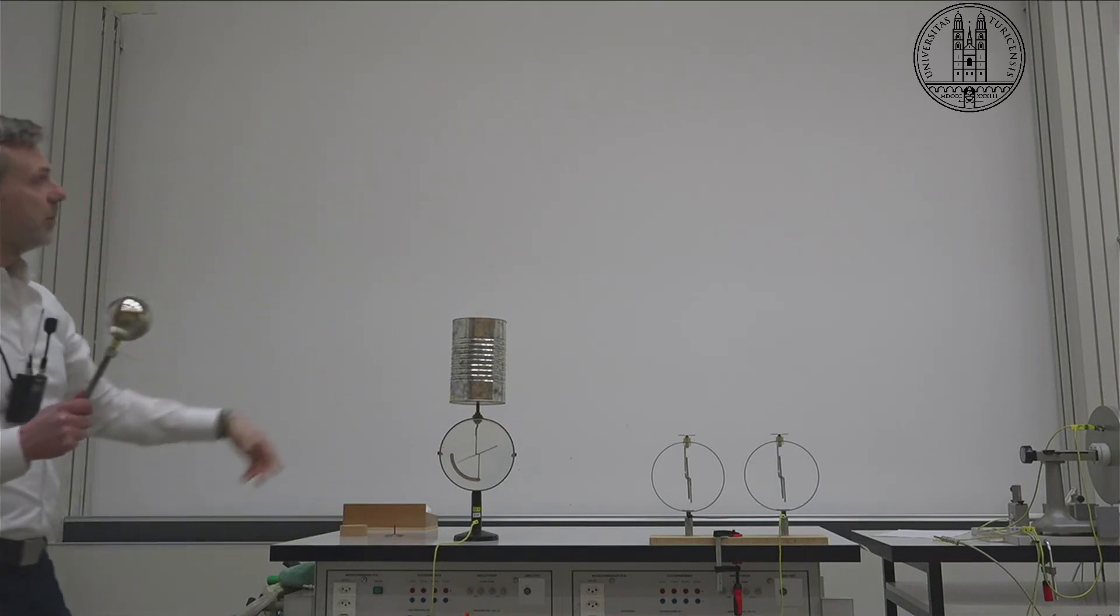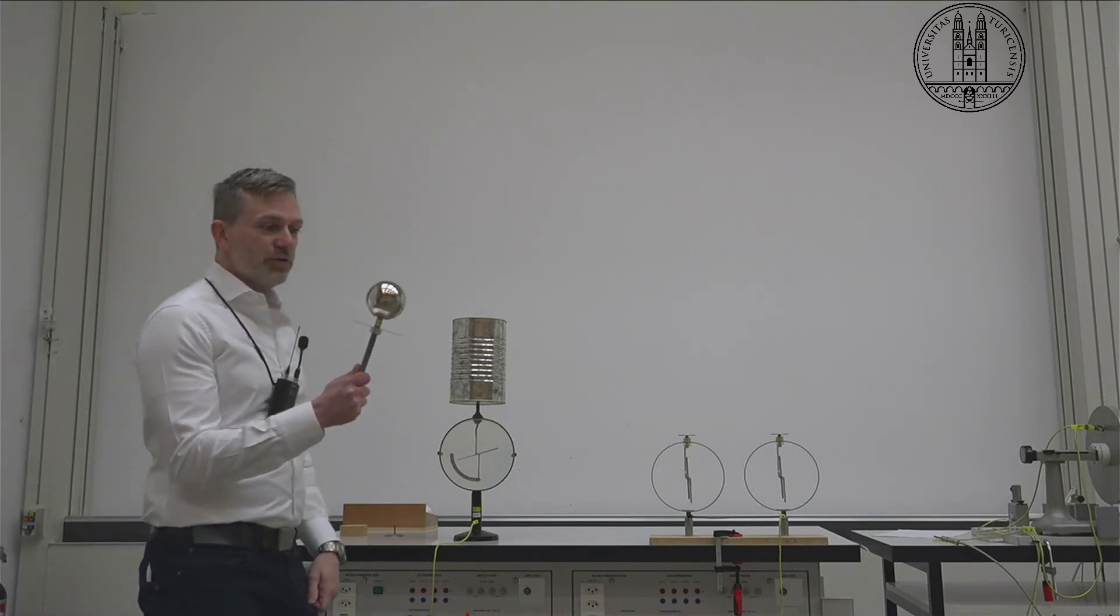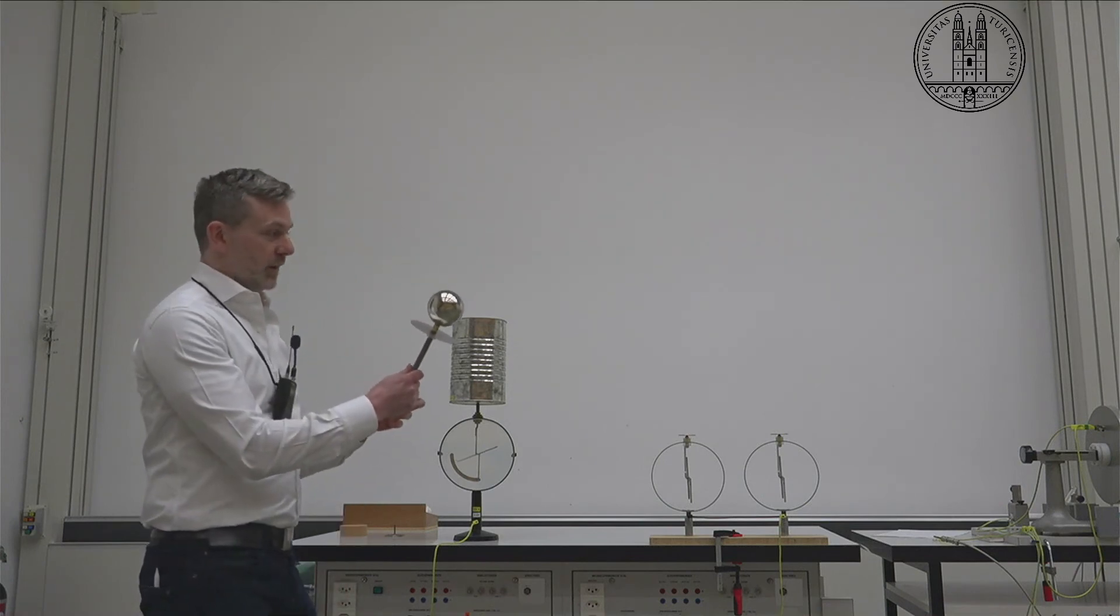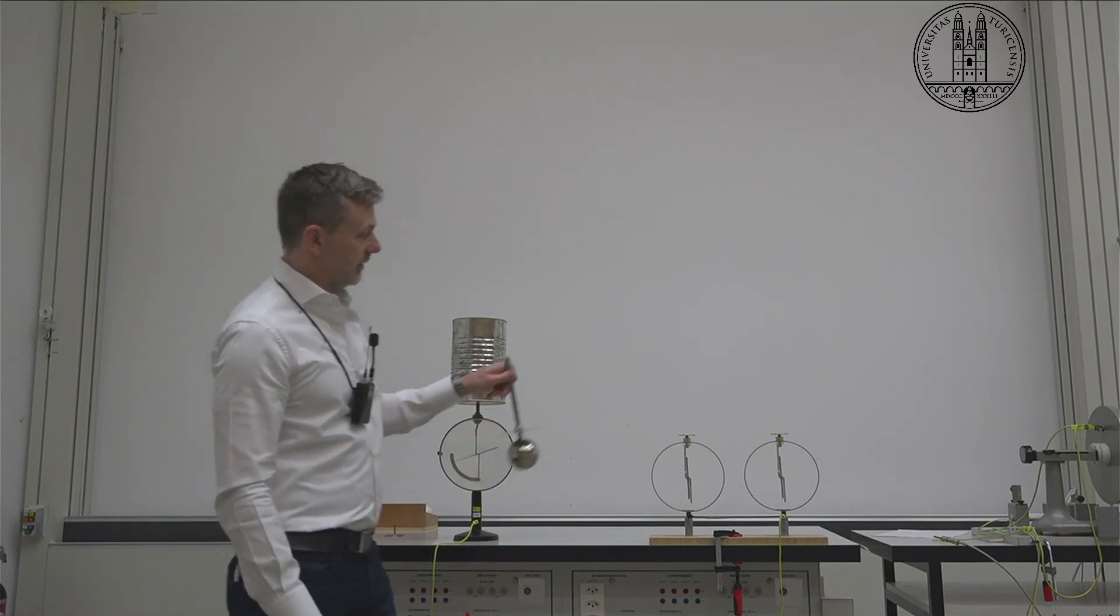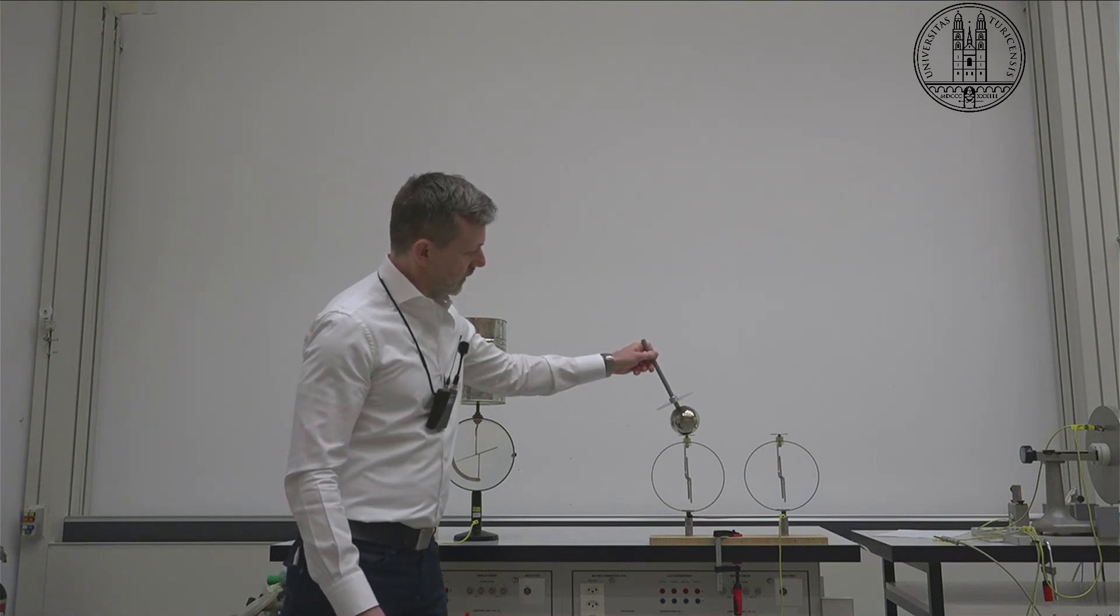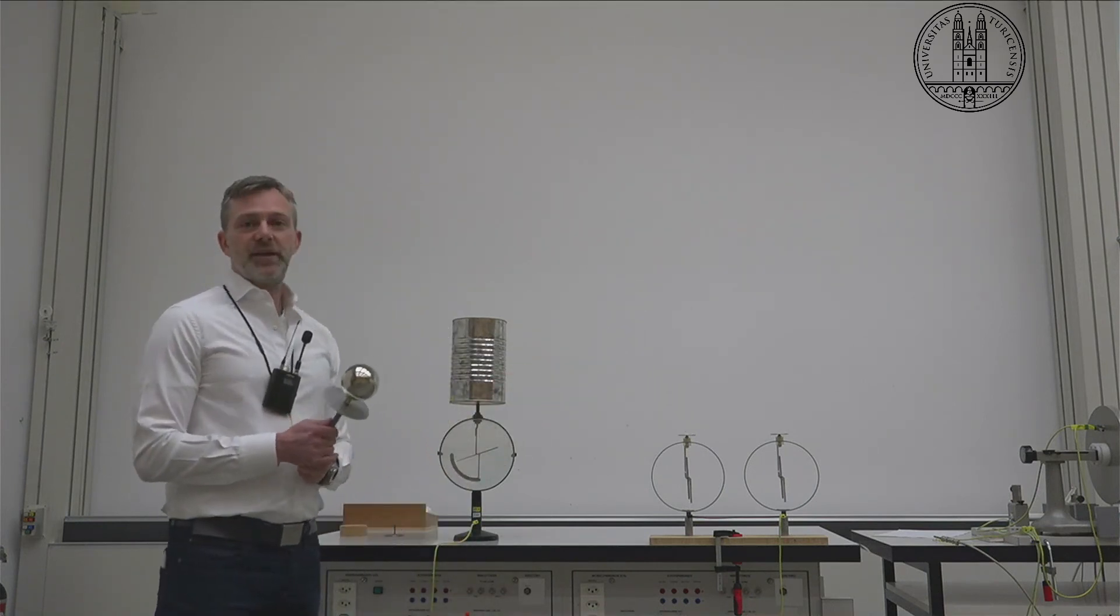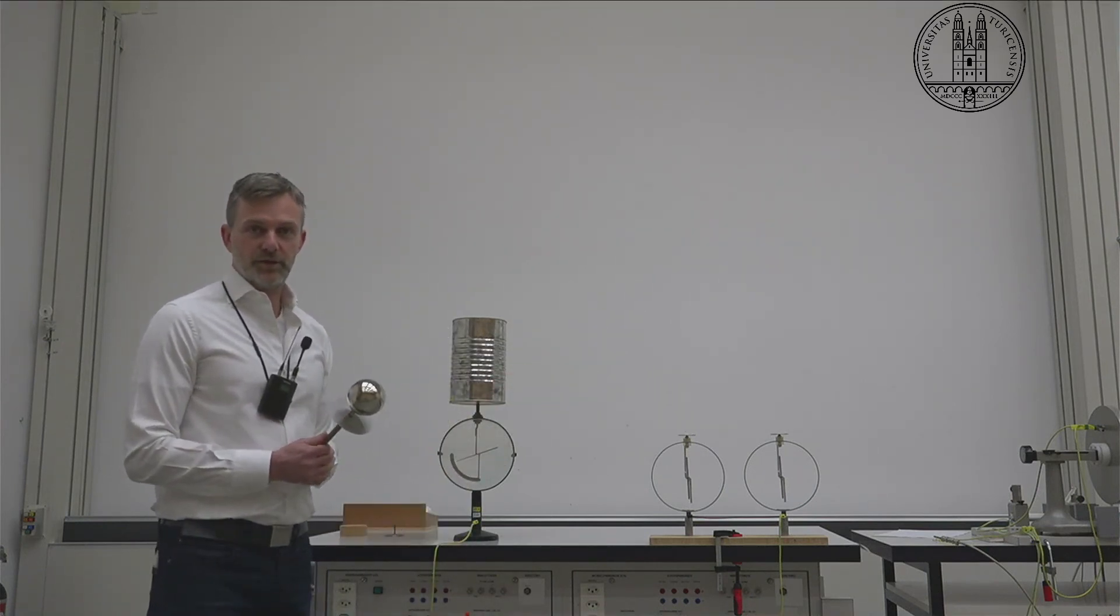And we see that we have now charged up our can here and let's find out if we've removed the charge from our sphere. This should be zero. I come over to my electrometer and we see that in fact there is no charge left on here. So we've done our experiment and physics works once again. So I'll see you next time.